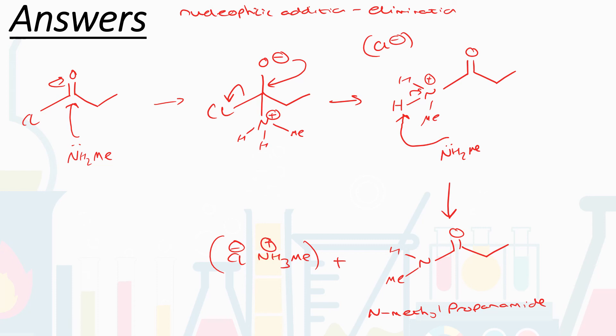We have an arrow from the lone pair on NH₂ onto the delta positive carbon. Carbon can only have four bonds, so we have an arrow from the center of that C=O bond onto the electronegative oxygen — that's the pi component of that bond breaking, electrons moving onto the electronegative oxygen. We conserve charge: overall we're neutral. We now have a negative charge on the oxygen and a positive charge on the nitrogen, because we've made four bonds to that nitrogen.